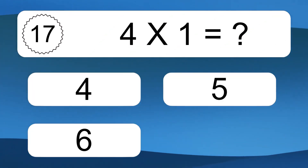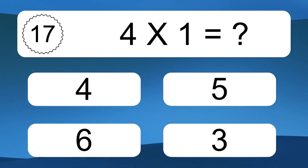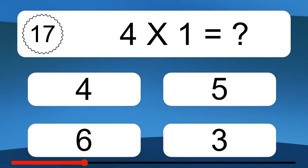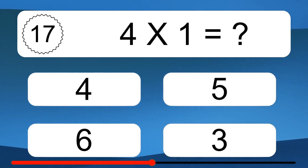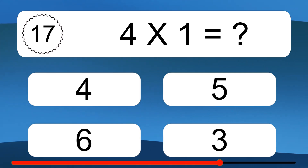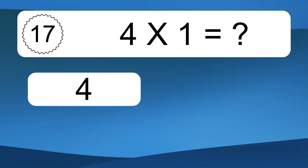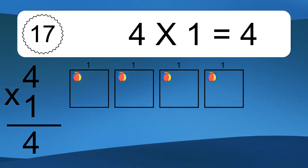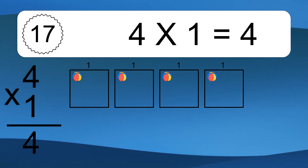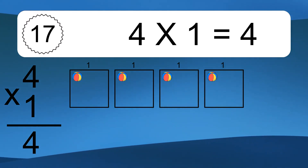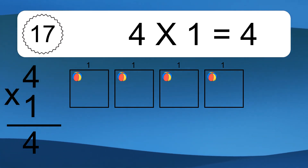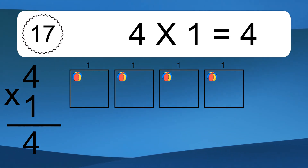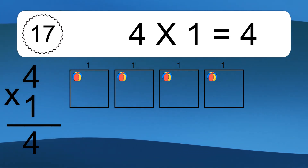4 times 1 equals what? 4 times 1 equals 4. We have 4 boxes, and each box has 1 colorful ball inside. If you count all the balls in all the boxes together, you will have 4 times 1 balls. This equals 4 balls.